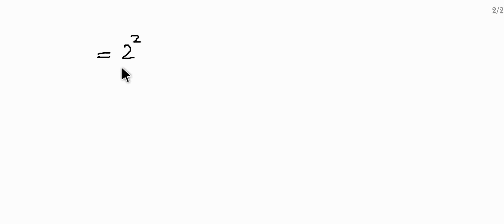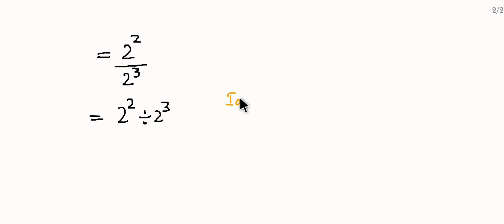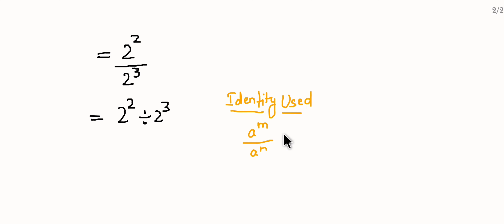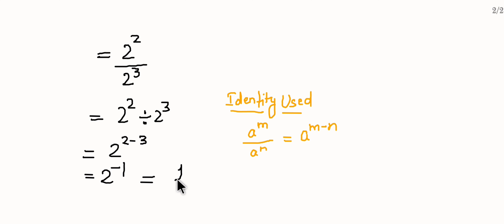2 to the power 2 upon 2 to the power 3 — base same है, तो power divide होगी। Identity: a to the power m divided by a to the power n is equal to a to the power m minus n. तो 2 to the power 2 minus 3 = 2 to the power minus 1 = 1 by 2. Answer है 1/2.